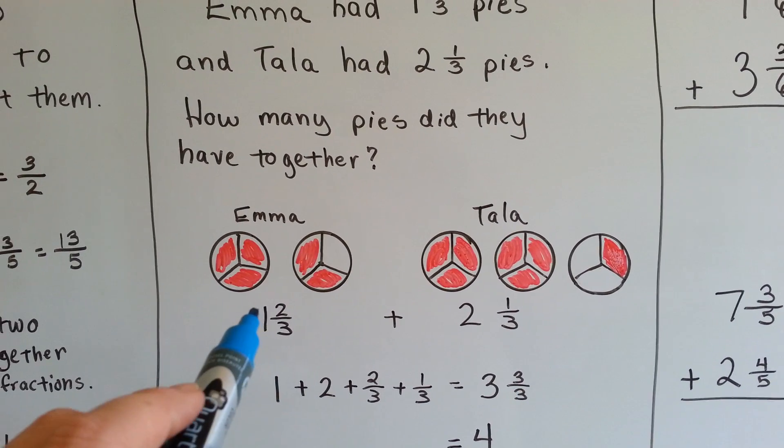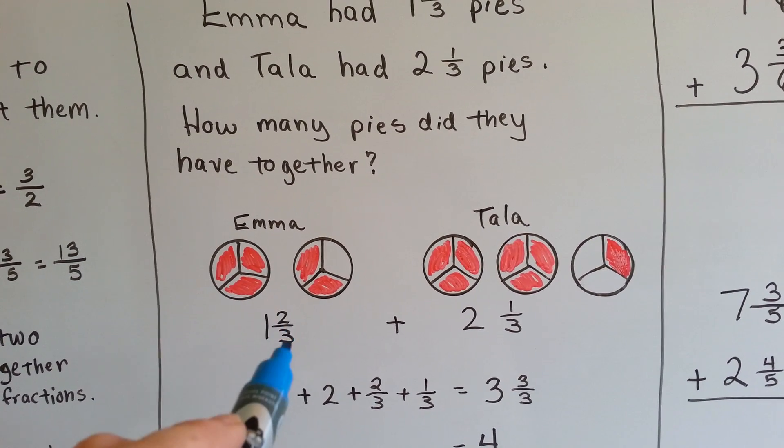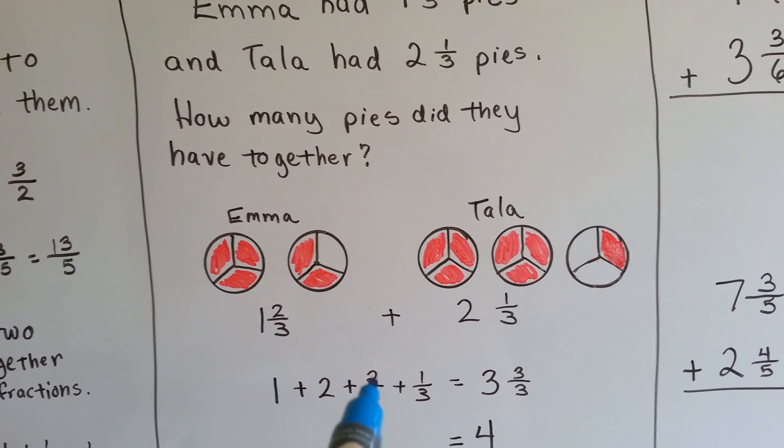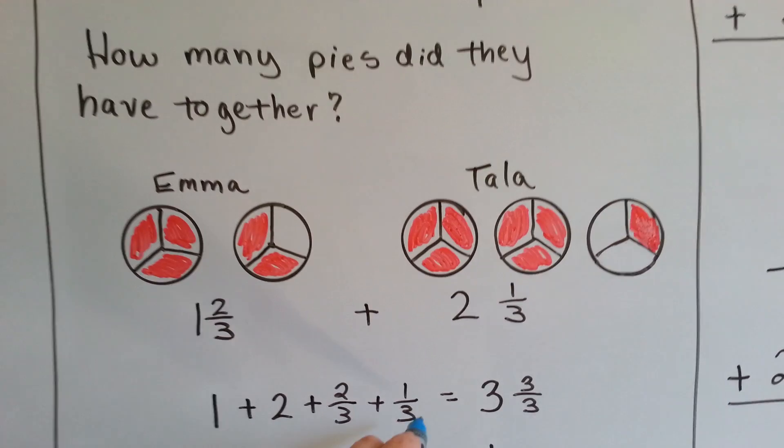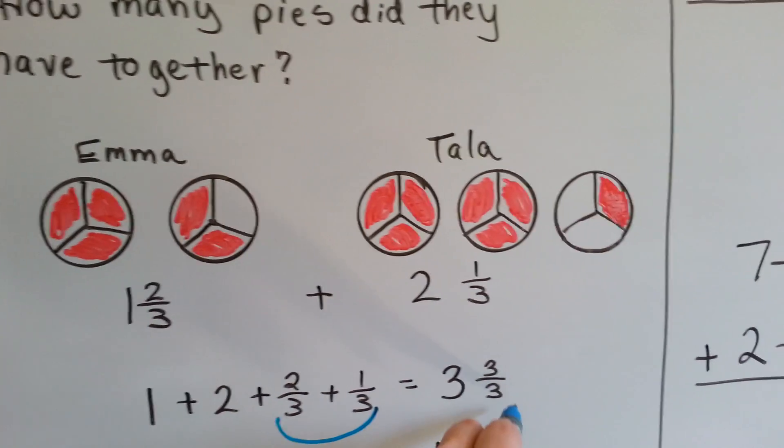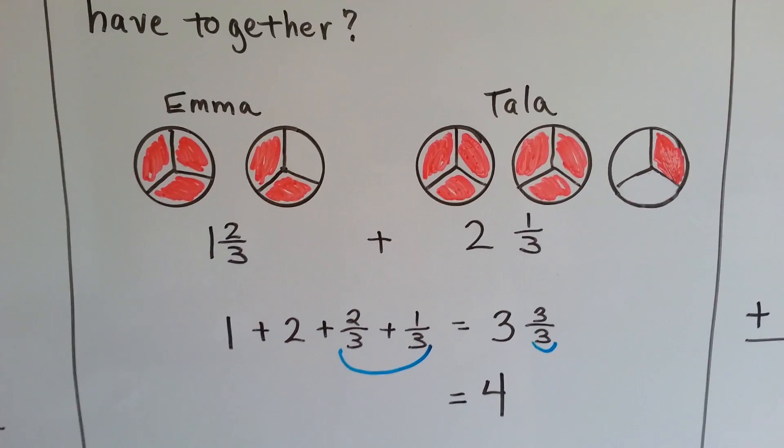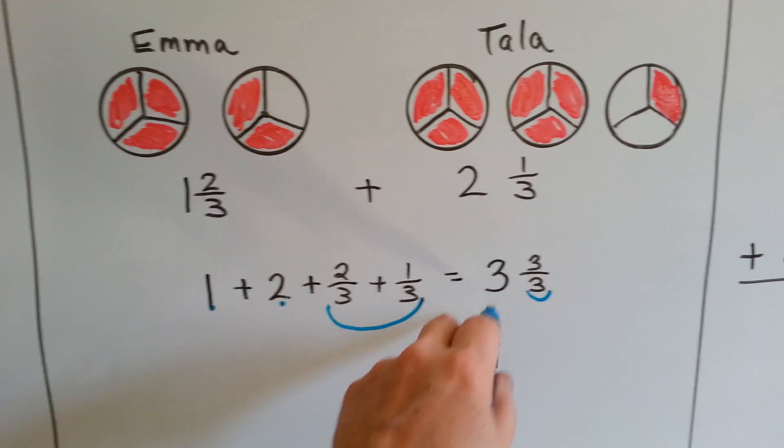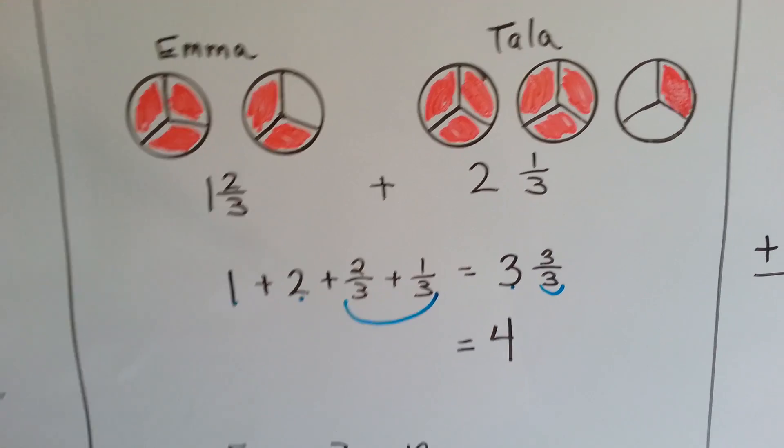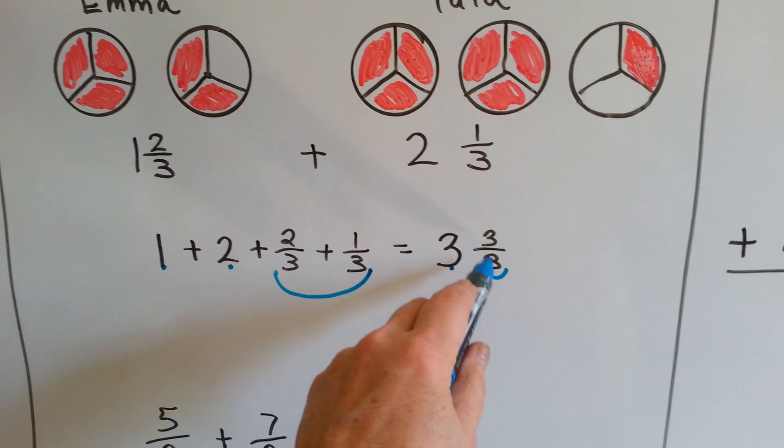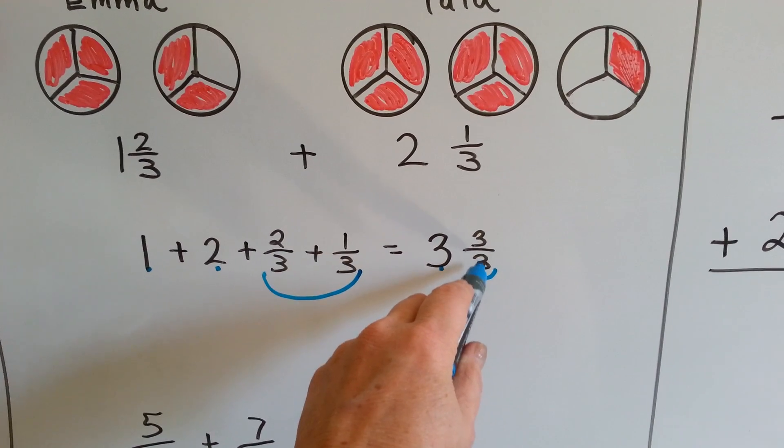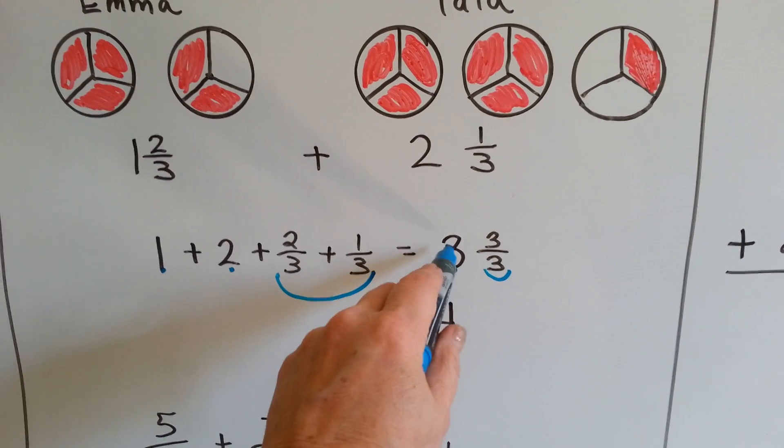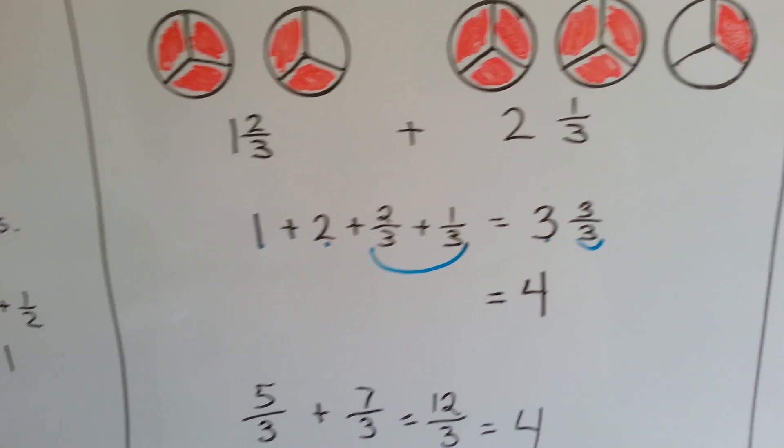When we add them together, we add the 2/3 plus the 1/3, right here, and we get 3/3. We add the 2 and the 1 together and we get 3. Well, we know that three parts of something split into three parts is the whole thing. So, 3 and 3/3 is a 4.